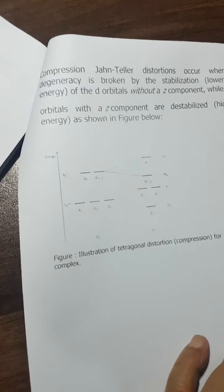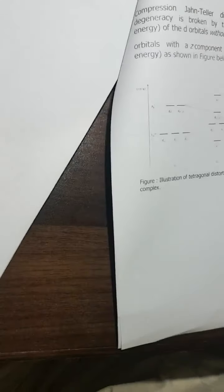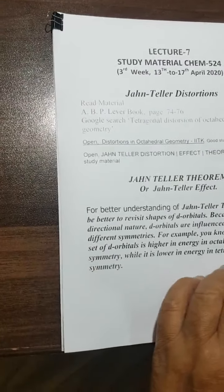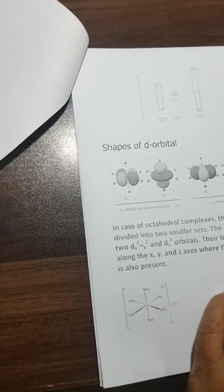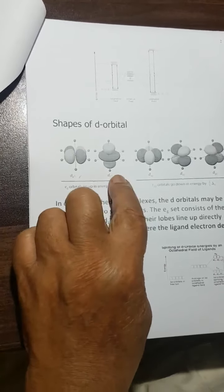This is all about Jahn-Teller effect or Jahn-Teller distortion. Very simple - whenever there is unequal occupation of d orbitals, whether it's an eg set or t2g set, there will be distortion.